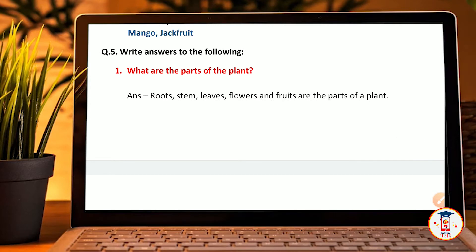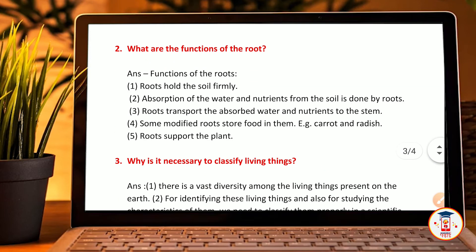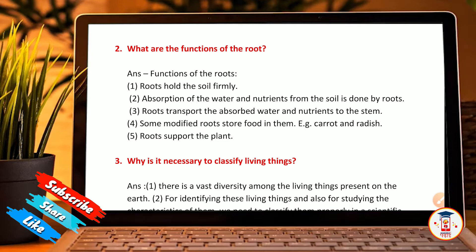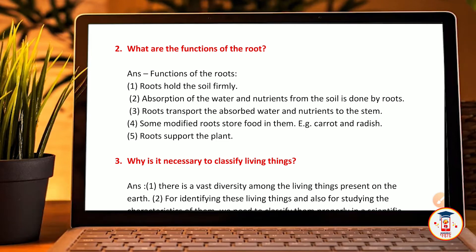Question number 5: answer the following questions. What are the parts of a plant? Answer: roots, stem, leaves, flower, and fruits are the parts of plants. What are the functions of roots? Roots hold the soil firmly. Absorption of water and nutrition from the soil is done by roots. Roots transfer the absorbed water and nutrition to the stems. Some modified roots store food in them — for example, carrot and radish. Roots also support the plant.